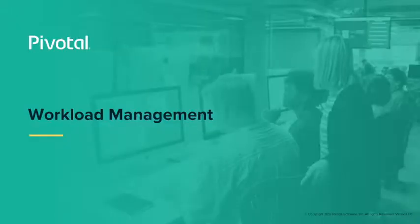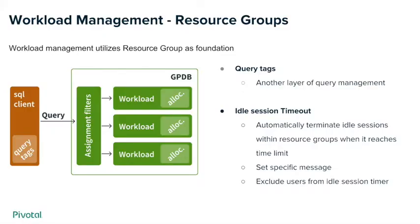The workload management capabilities within GPCC are based on the concept of resource groups. GPCC utilizes resource groups as the foundation because they allow you to gate and tightly control what resources are available to which type of workloads — you can allocate based on CPU or memory. GPCC adds capabilities on top of that through the use of query tags, which allow you to add specific key-value pairs and finer-grained controls to your Greenplum queries and route them to different resource groups beyond simply the GPDB role assignment.